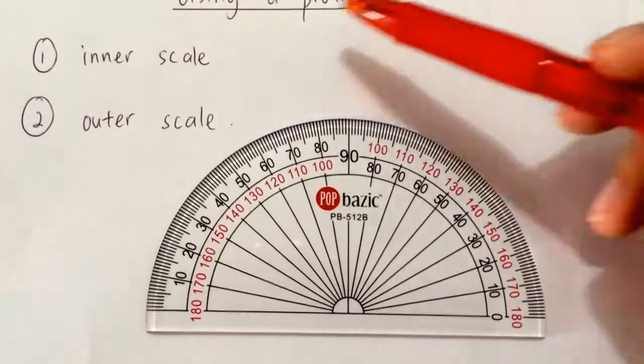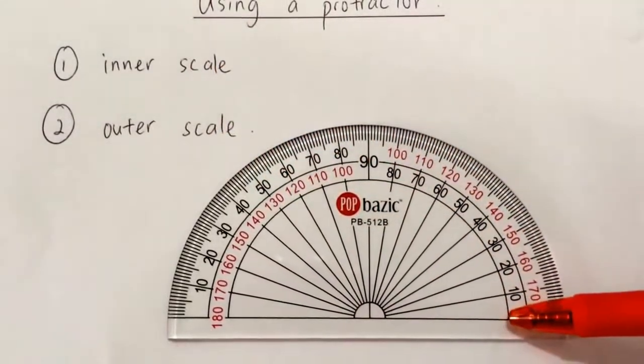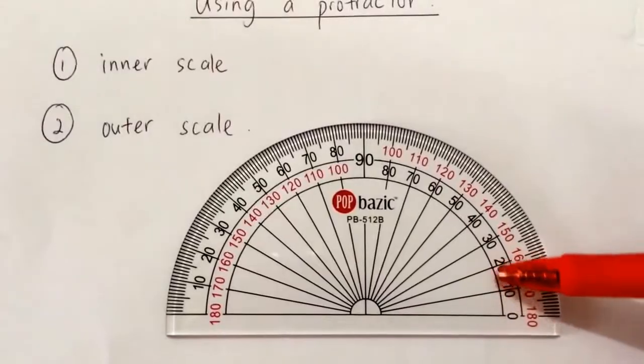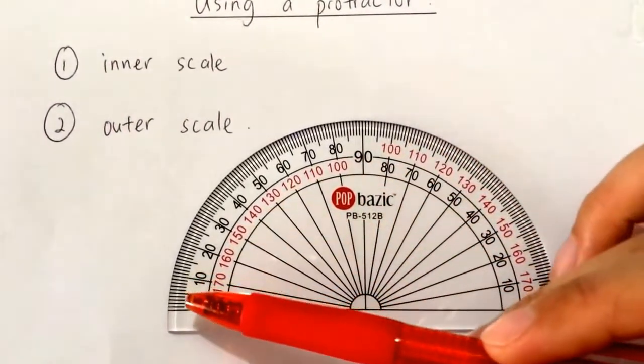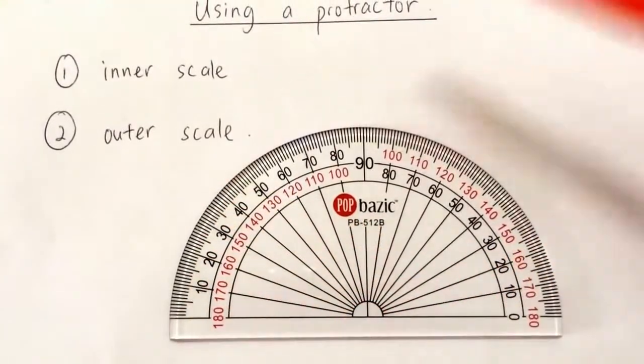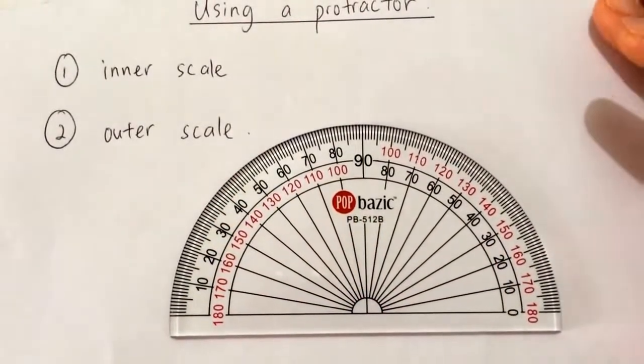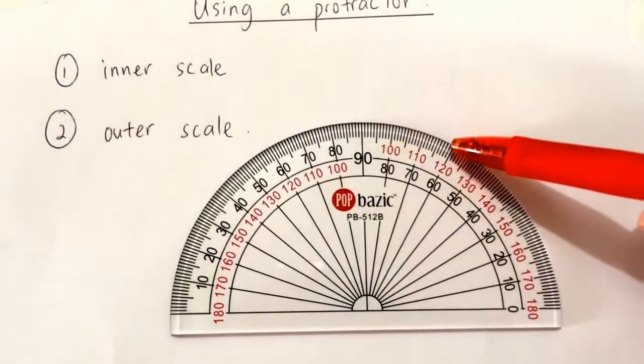So the difference between the inner scale and the outer scale is that zero starts on the right-hand side for the inner scale, and zero starts on the left-hand side for the outer scale. Now, how do I read the numbers? And how do I read all these lines?